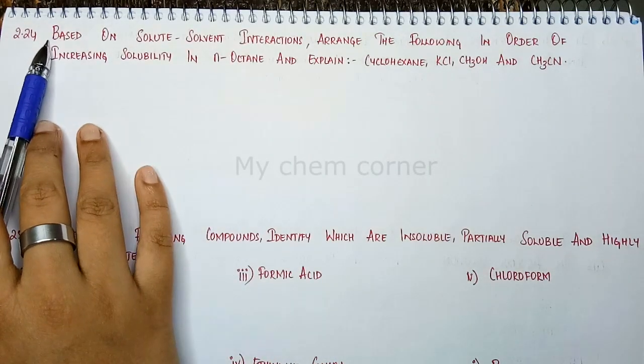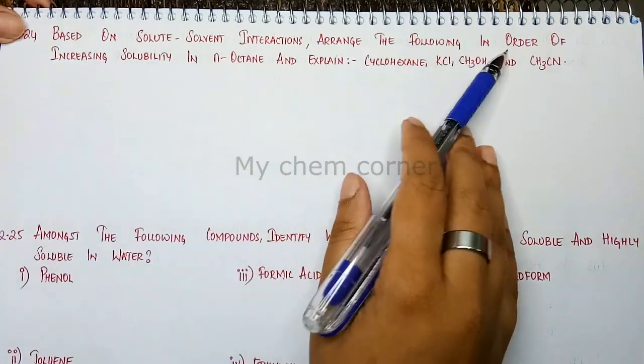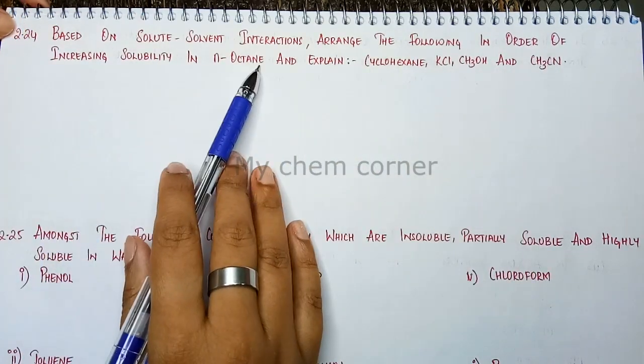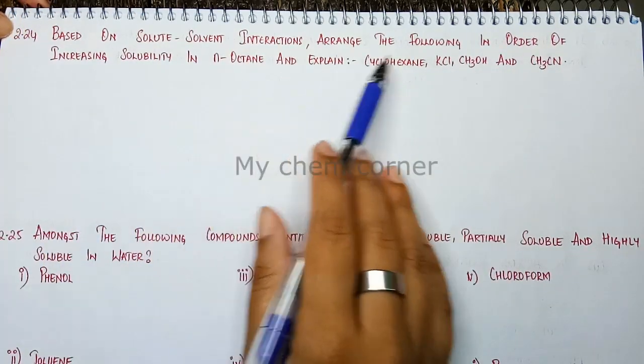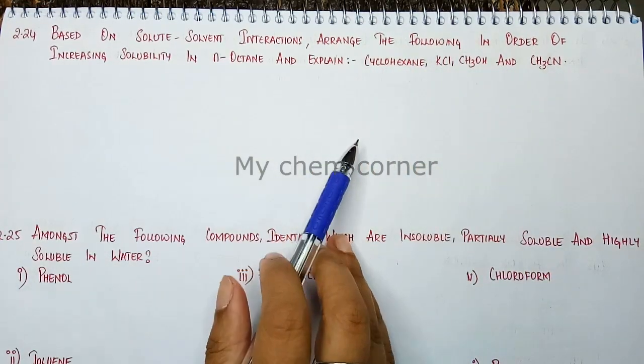Next question is 2.24. Based on solute-solvent interaction, arrange the following in order of increasing solubility in n-octane and explain: cyclohexene, KCl, CH3OH, and CH3CN.